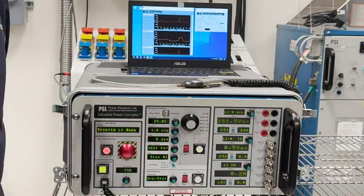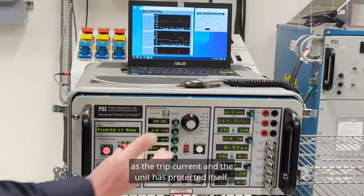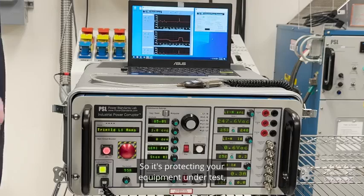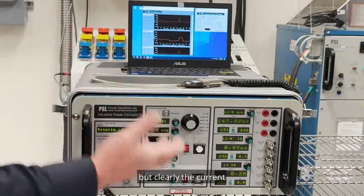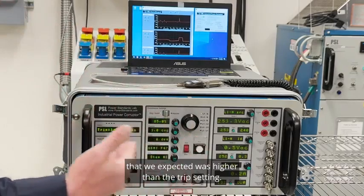The inrush has exceeded what we have as the trip current and the unit has protected itself. So it's protecting your equipment under test, but clearly the current that we expected was higher than the trip setting.